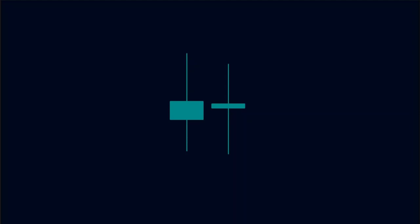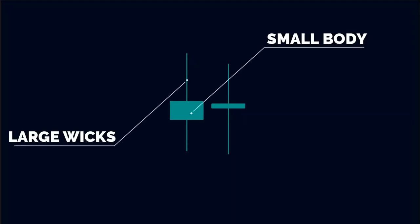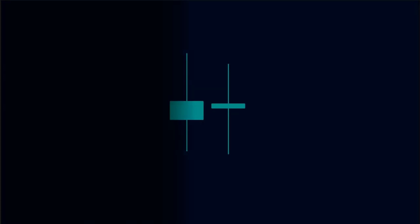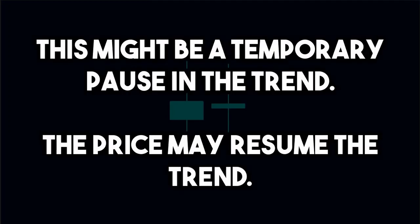And lastly, as the trend starts to exhaust, we see doji candles. These doji candles have a very small body and large wicks on both sides. This indicates that the previous trend has completely exhausted, and the buyers and sellers are currently in a tight tug-of-war for dominance. Hence, these doji candles indicate a change in trend might occur soon. Although this might just be a temporary pause in the trend, and the price may resume the trend.